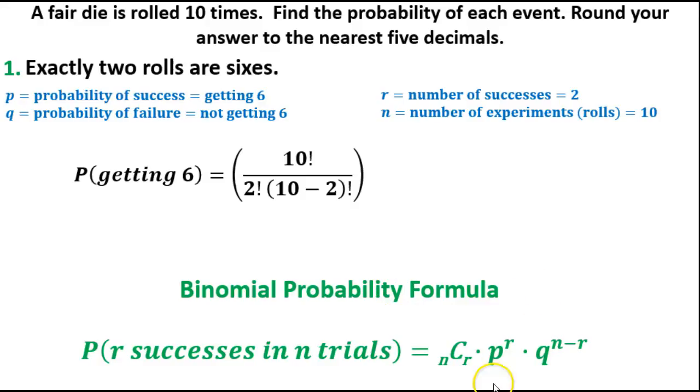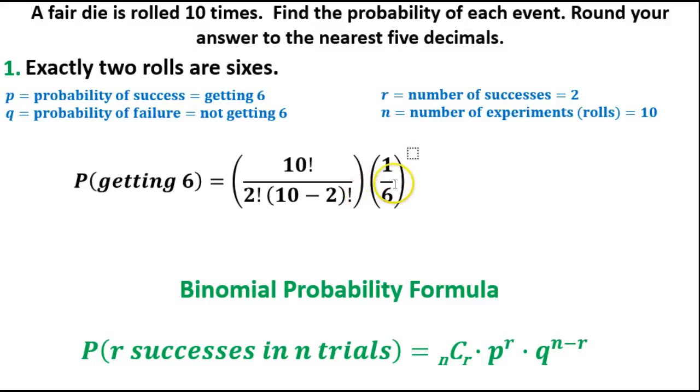Now we need to determine what our probability P is, the probability of getting a six. If you roll a die, that's one-sixth. We're going to multiply by the probability, which is one-sixth, raised to a certain power. But first let's find our probability of failure. The probability of not getting a six is five-sixths. We can identify that by going one minus whatever this probability is. One minus one-sixth gives us five-sixths.